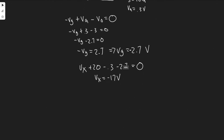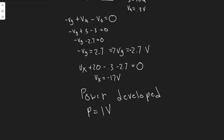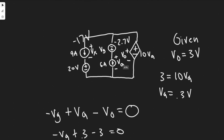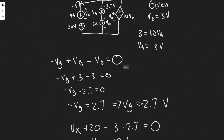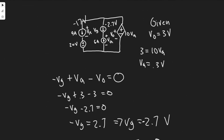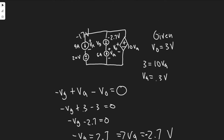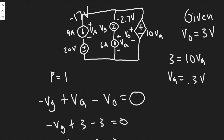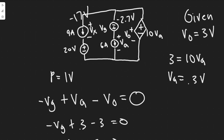Now that we have everything labeled, we can solve for power. The formula is P equals IV. We need to determine which sources are developing power and which are absorbing power. Using the passive sign convention: if the calculated power is negative, the element is developing; if positive, it's absorbing. Specifically, current entering the positive terminal gives positive (absorbing) power, and current entering the negative terminal gives negative (developing) power.